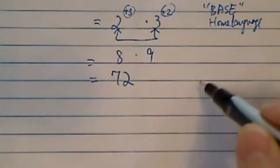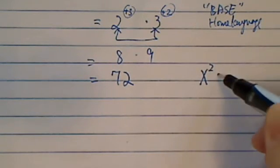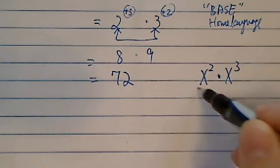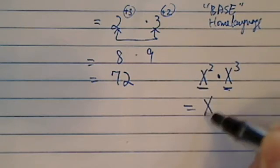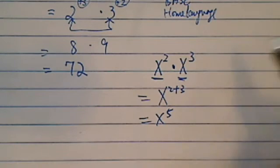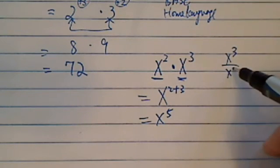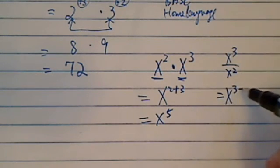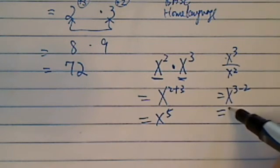So when you have the same base, say x squared times x to the 3rd, now that's the same base. Yes, you can add over here. Since adding is for multiplication, obviously, if you have x cubed over x2, then you're going to divide. Same base here again. You have x to the 1.